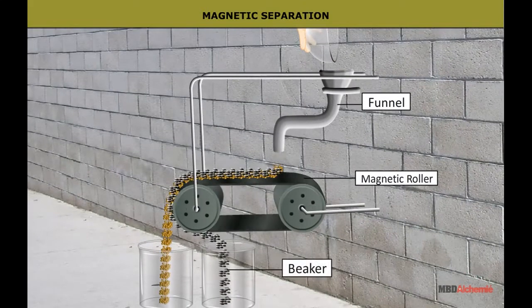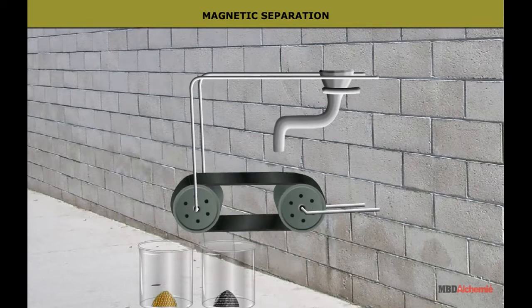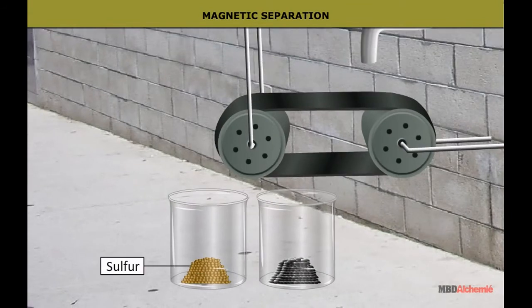On passing through this roller, the iron particles get separated from the sulphur particles and they are collected on passing through the roller into two beakers. First of all,